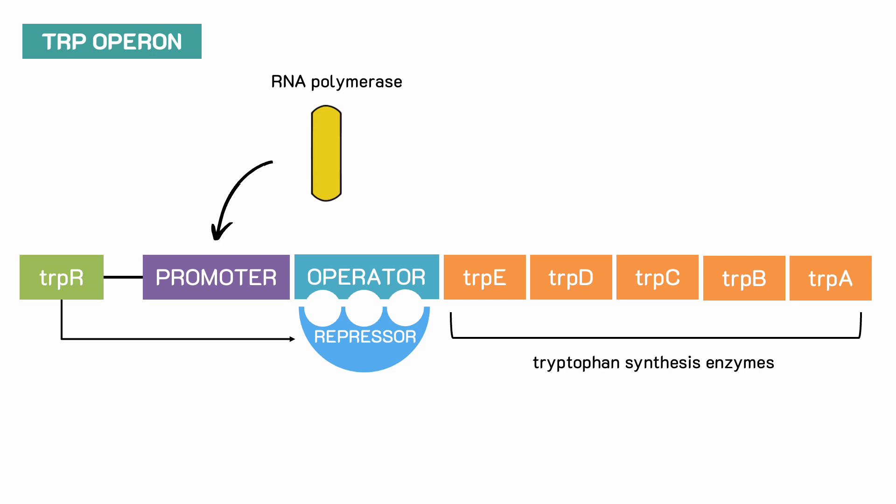When there's a low concentration of tryptophan and we need to synthesize more, the repressor is inactive and RNA polymerase can transcribe the operon.